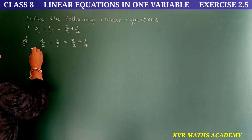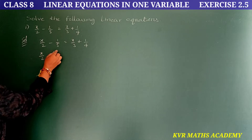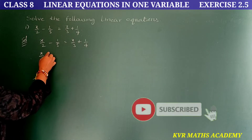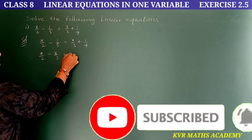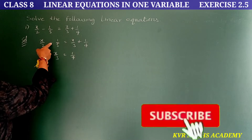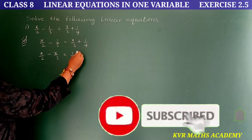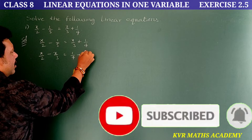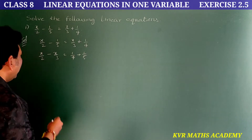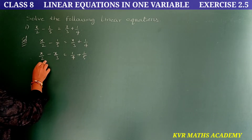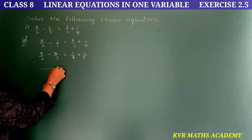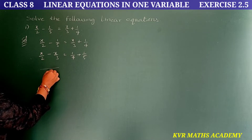Transfer x/3 to the left side: x/2 - x/3. Then 1/4 transferred to the right side becomes +1/5. What is the LCM of 2 and 3 on the LHS? It is 6.